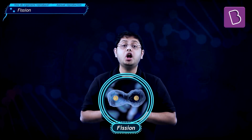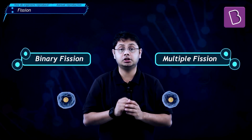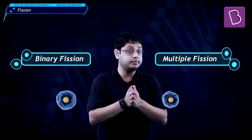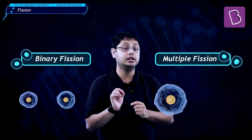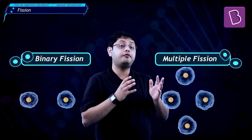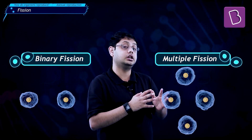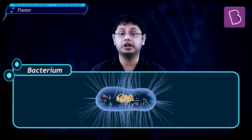Fission can be broadly classified into two types: binary fission and multiple fission. As the names suggest, in binary fission, two individuals are formed from a single parent, whereas in multiple fission, many individuals can be formed from a single parent. Most bacteria rely on binary fission for propagation.